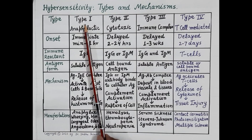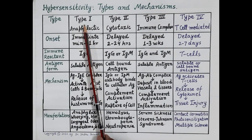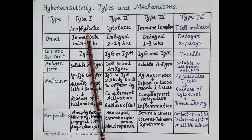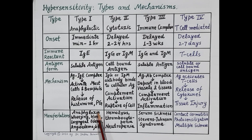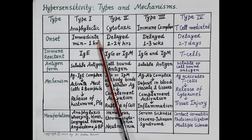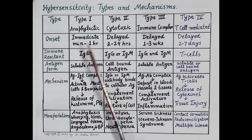Type 1 allergic reactions are also called anaphylactic reactions, as they can produce anaphylaxis. Anaphylaxis is a severe, potentially life-threatening allergic reaction that can occur within minutes of exposure to the drug. Type 1 allergic reactions are immediate onset reactions that usually occur within minutes to an hour of exposure to the drug.